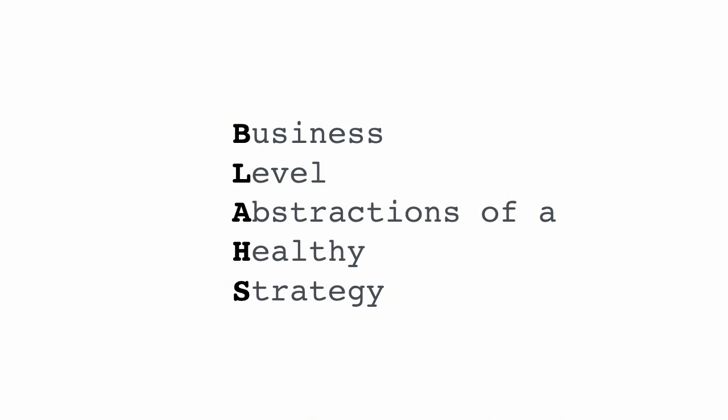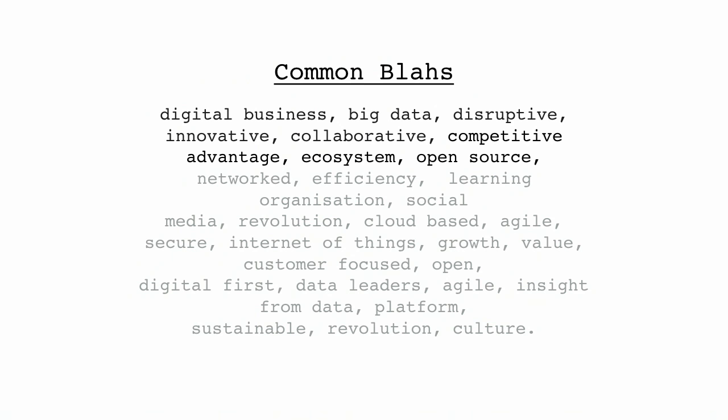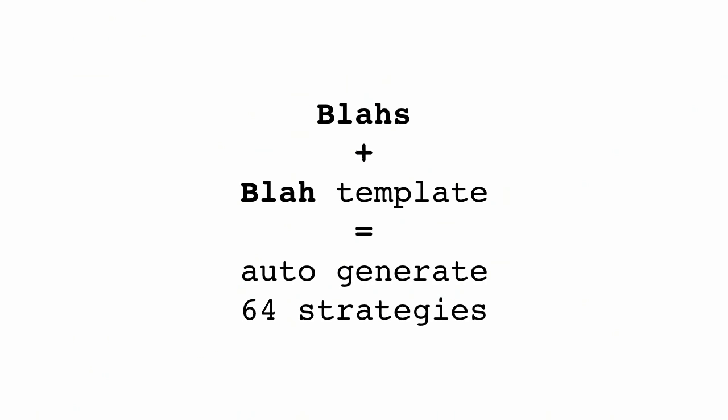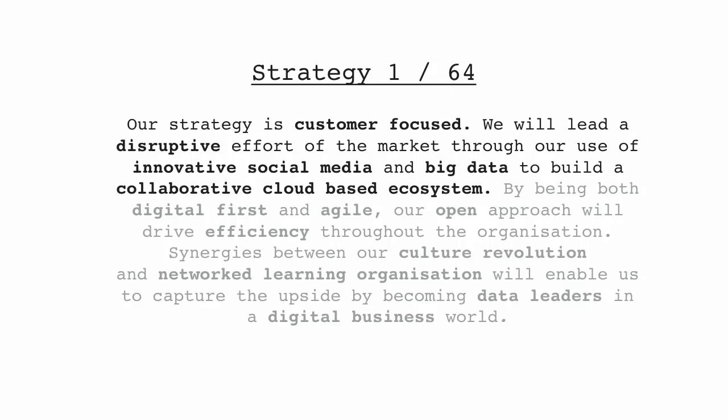But what I did do is I used to go around listening to other CEOs talk about strategy. And I started to record the words they said, looking for what I call business level abstractions of a healthy strategy or BLAHs for short. And I do this every couple of years. And this is my recent set of common BLAHs that people talk about. Things like digital business, big data, disruptive, innovative, collaborative, competitive advantage, ecosystem, open source, et cetera. And then what I normally do is get all these strategy documents, pile them together, and generate a BLAH template. Our strategy is BLAH. We will lead a BLAH effort of the market through our use of BLAH and BLAH to build a BLAH. And then I combine the BLAHs and the BLAH template and auto generate a whole bunch of different strategies at random.